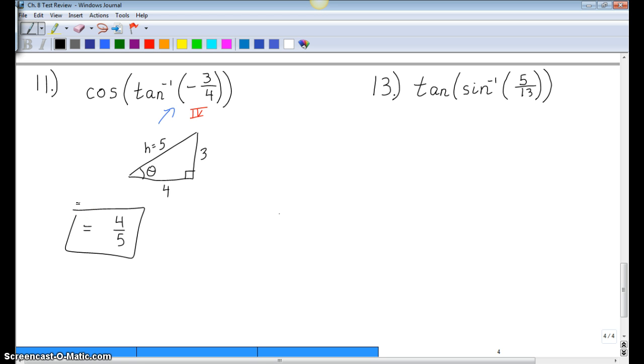We'll do the same thing with 13. We'll do our triangle. It's not a great triangle, but you get the point. So here's our angle theta. We are looking at a sine ratio of 5 thirteenths, so opposite over hypotenuse. And our other side length, if you know your Pythagorean triples, this is a 5, 12, 13 trig ratio.